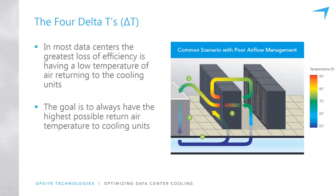Measuring delta Ts two and four can provide a lot of insight into how much room there is to optimize your facility. The goal is to get those two uncommon delta Ts down to around five degrees Fahrenheit. Moving from 30 degrees potentially down to five degrees is the goal. Below five degrees you reach a point of diminishing returns — it's hard to achieve less than five degrees.